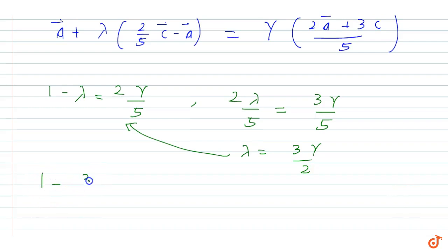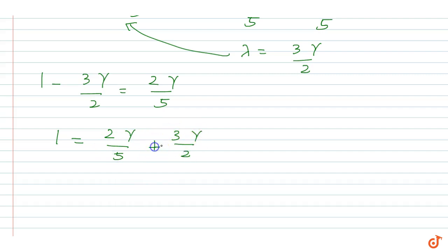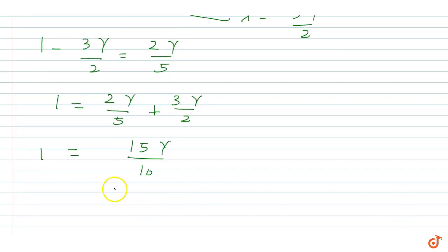Substituting lambda = 3 gamma / 2 into the A vector equation: 1 minus (3 gamma / 2) = 2 gamma / 5. So 1 = 2 gamma / 5 + 3 gamma / 2, which gives 1 = (4 gamma + 15 gamma) / 10. Therefore gamma = 10/19.